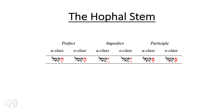The Hophal stem is the causative passive — 'caused to be.' Like the Hiphil, it has a he prefix; however, instead of looking for a patach, we look for a U-class or short O-class vowel. Again we have the mem prefix in the participle. In the perfect we have a qibuts or a qamets hatuf, and the same in the imperfect. There is no Hophal infinitive in the Old Testament.